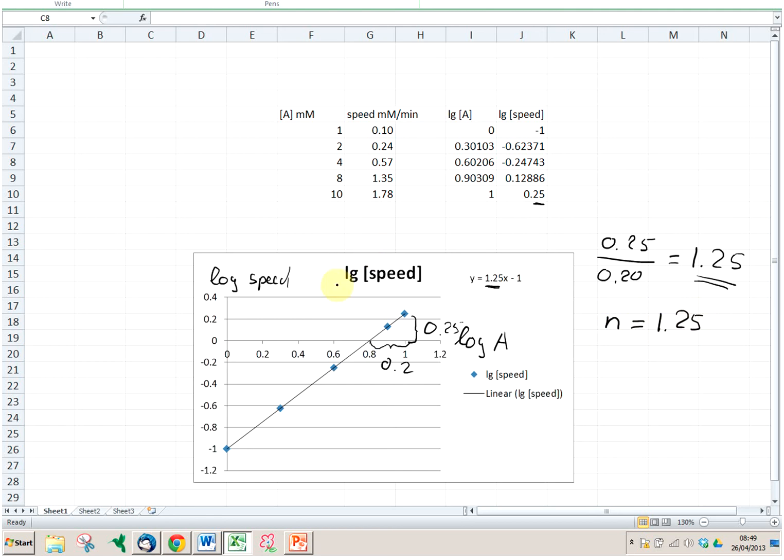And we can also calculate our rate constant because we know that the rate constant here. So k or log k equals our c. When we had this y equals mx plus c. So our c here is minus 1. And all we need to do in order to get k is just simply do both sides 10 to the power of. So we've got k equals 10 to the power of minus 1. And that is 0.1.